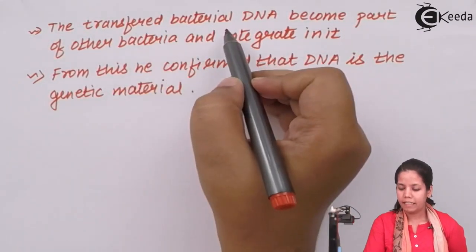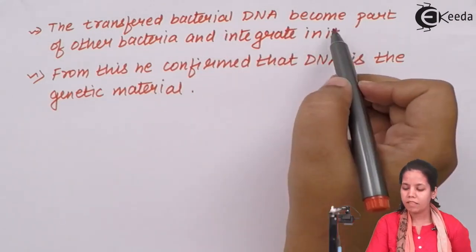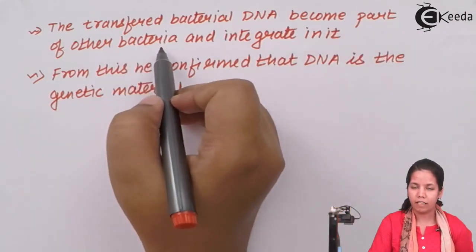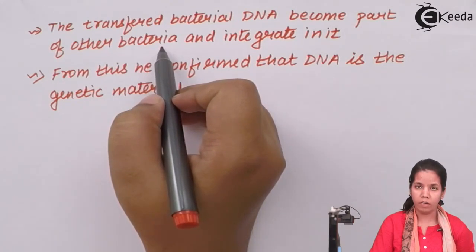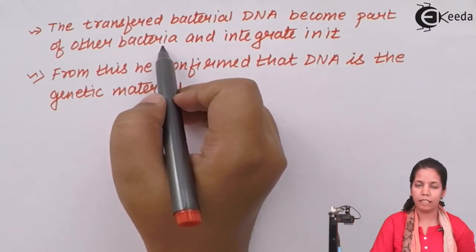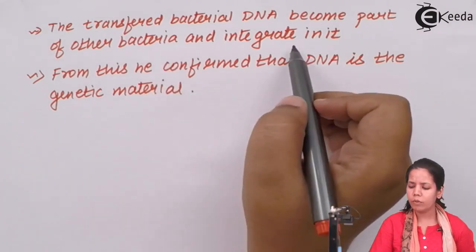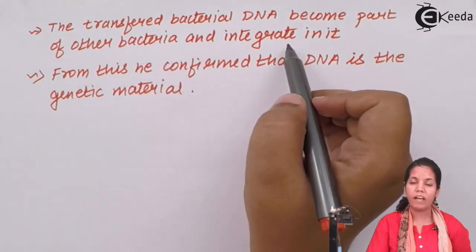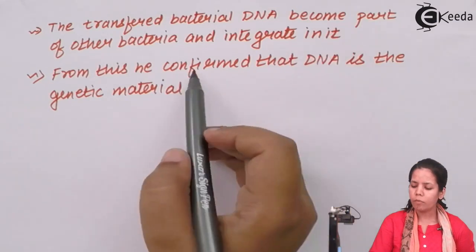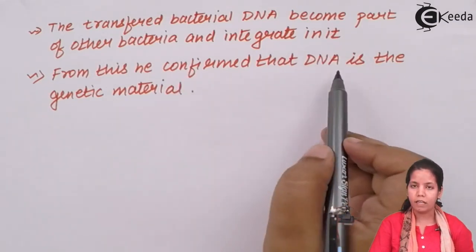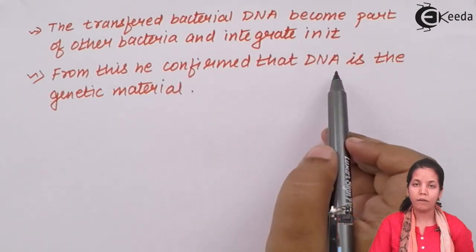The transferred bacterial DNA would become part of another bacterium's DNA. The phage would carry one bacterial DNA to another bacterial cell if it infected that cell. The transferred DNA material would integrate into the second bacterium's genome. From this, it was confirmed that DNA was the genetic material — it was DNA that was transduced and transferred.